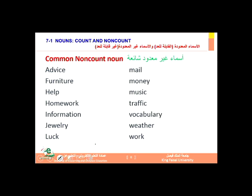Here is a list of the most common non-count nouns — nouns that cannot be counted: advice, furniture, help, homework, information, jewelry, luck, mail, money, music, traffic, vocabulary, weather, and work. It is not possible to use 's' with those nouns. You cannot say 'advices' or 'furnitures.' These are non-count nouns — you cannot count them.